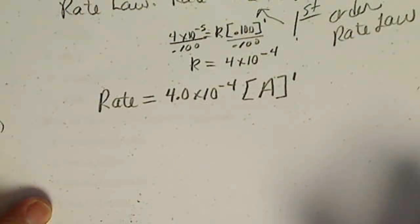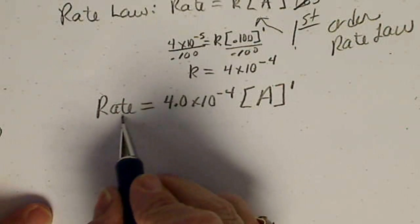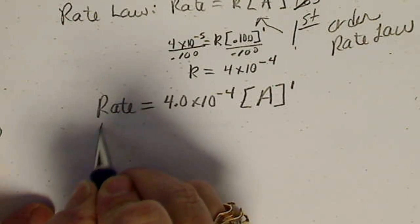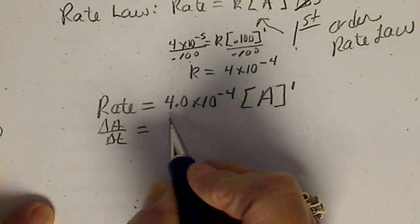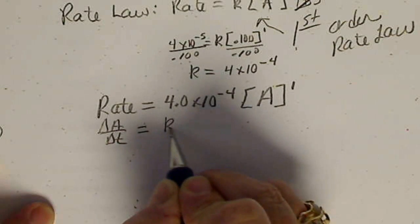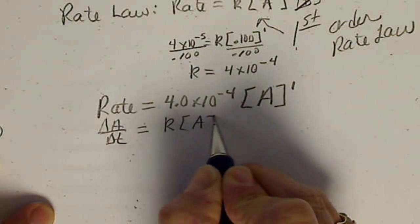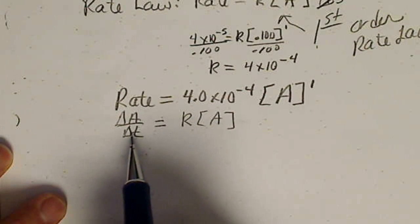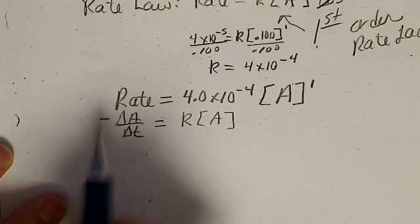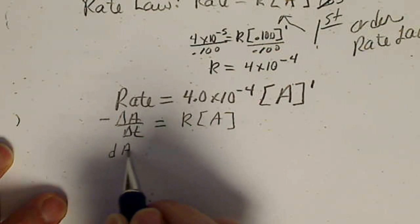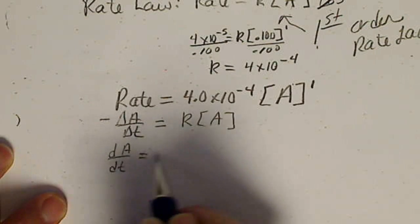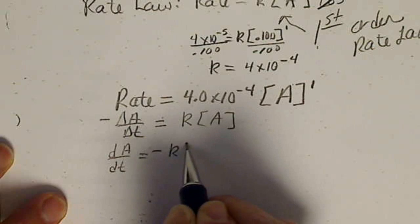If we felt like going through the calculus, I'm going to move this camera just a little bit. If we change the rate to delta A, delta T equals, I'm going to just rewrite it as K. The disappearance of A means that's going to be negative.